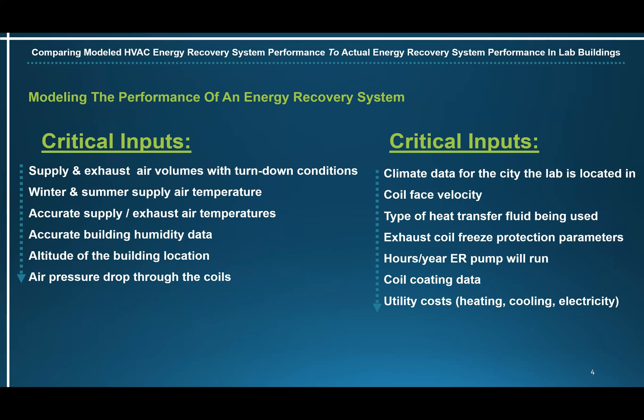Critical inputs: supply and exhaust air volumes with turndown conditions, winter and summer supply air temperature, accurate supply and exhaust air temperatures, accurate building humidity data, the altitude of the building location, the air pressure drop through the coils, the climate data for the city the lab is located in, coil face velocity, and type of heat transfer fluid being used.